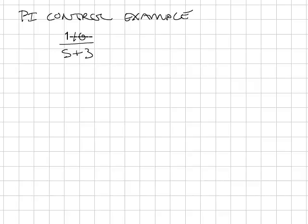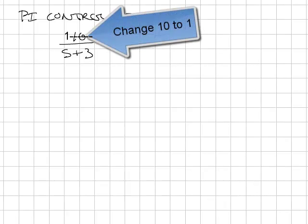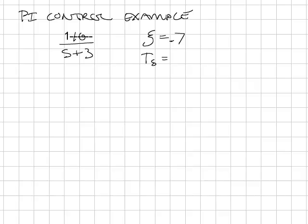Let's look at an example of PI, or proportional integral control. This is a simple example using the plant 10 over S plus 3, and I have the specifications for desired performance of a zeta equal to 0.7, a settling time less than 1 second, and no steady-state error to step input.